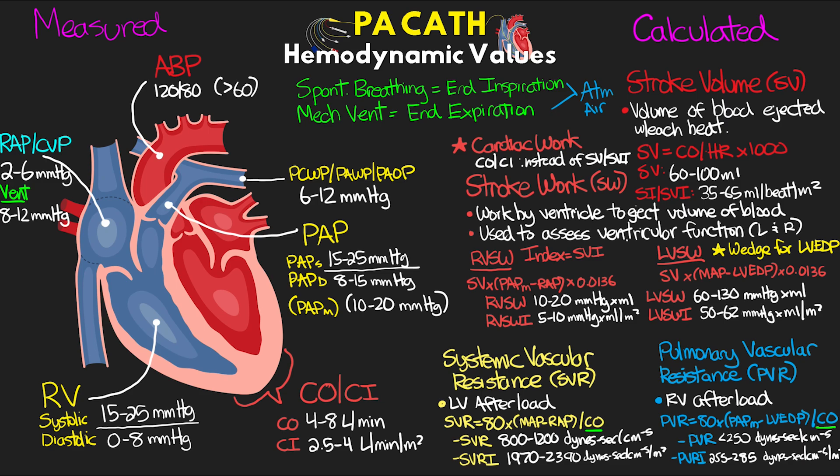I did want to go over those values and discuss those normal values so that you guys know and have them available. As we start to talk about some abnormalities that we can see, and as you see changes in your patient, you're really going to need to know where that normal is — the same with the normal appearance of the waveforms like we talked about in that last lesson — in order to be able to decipher some of the changes that you see going on.